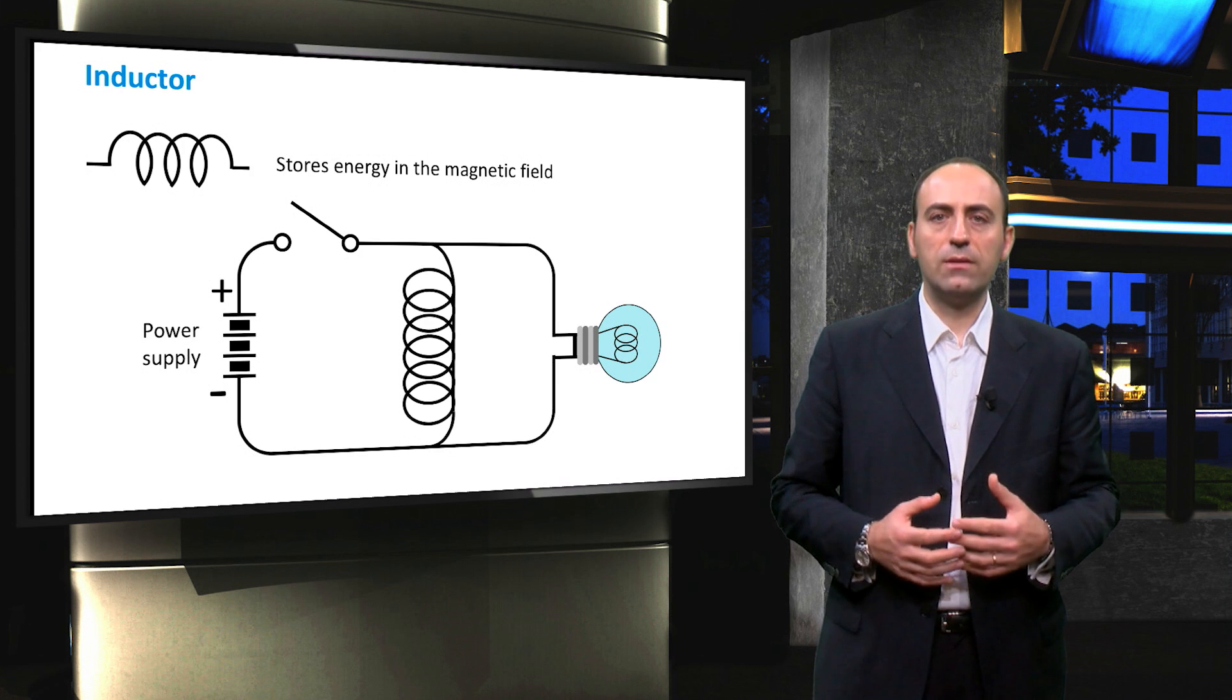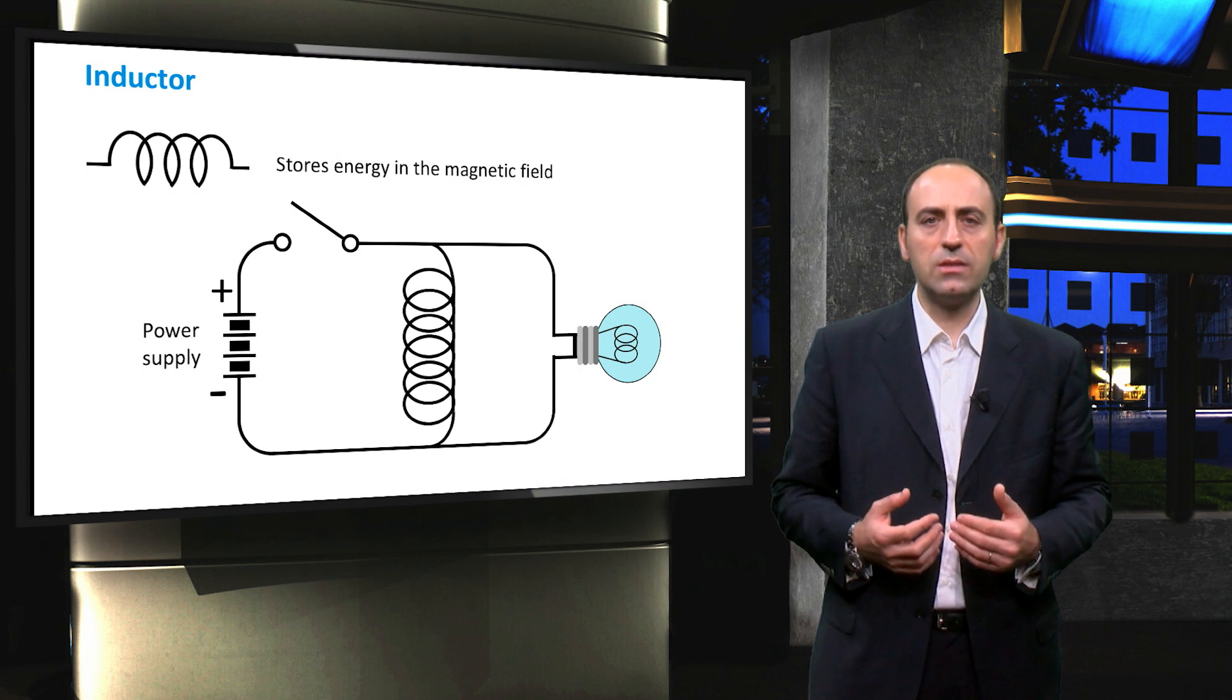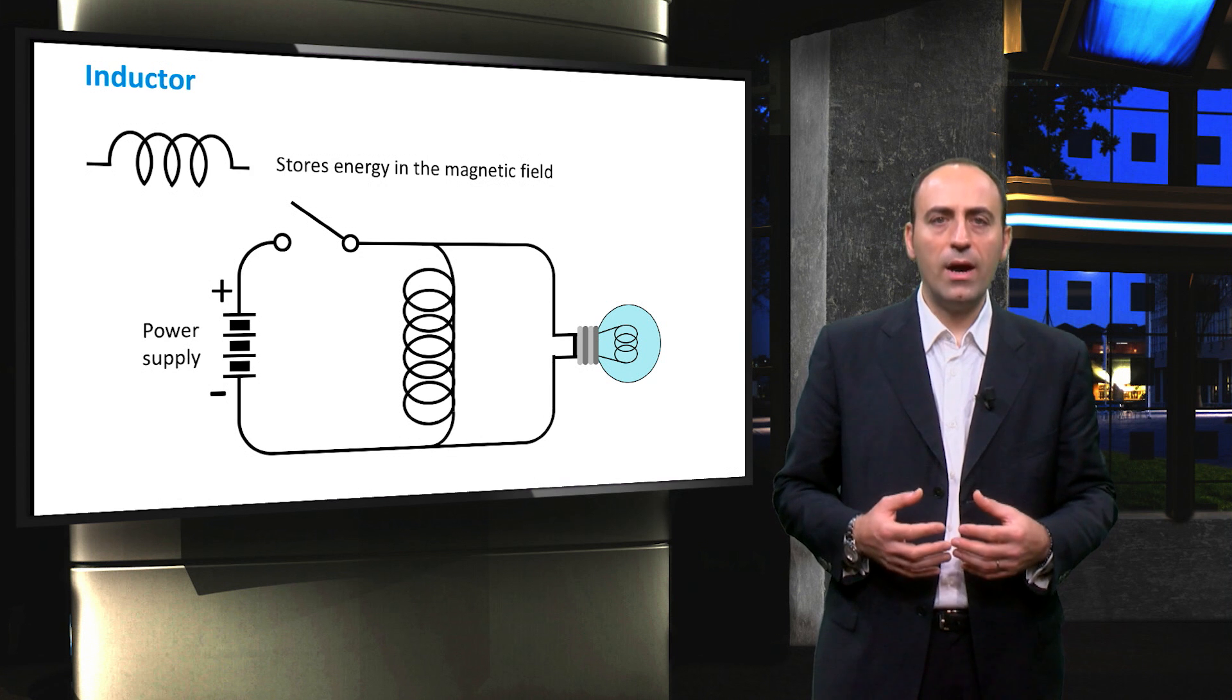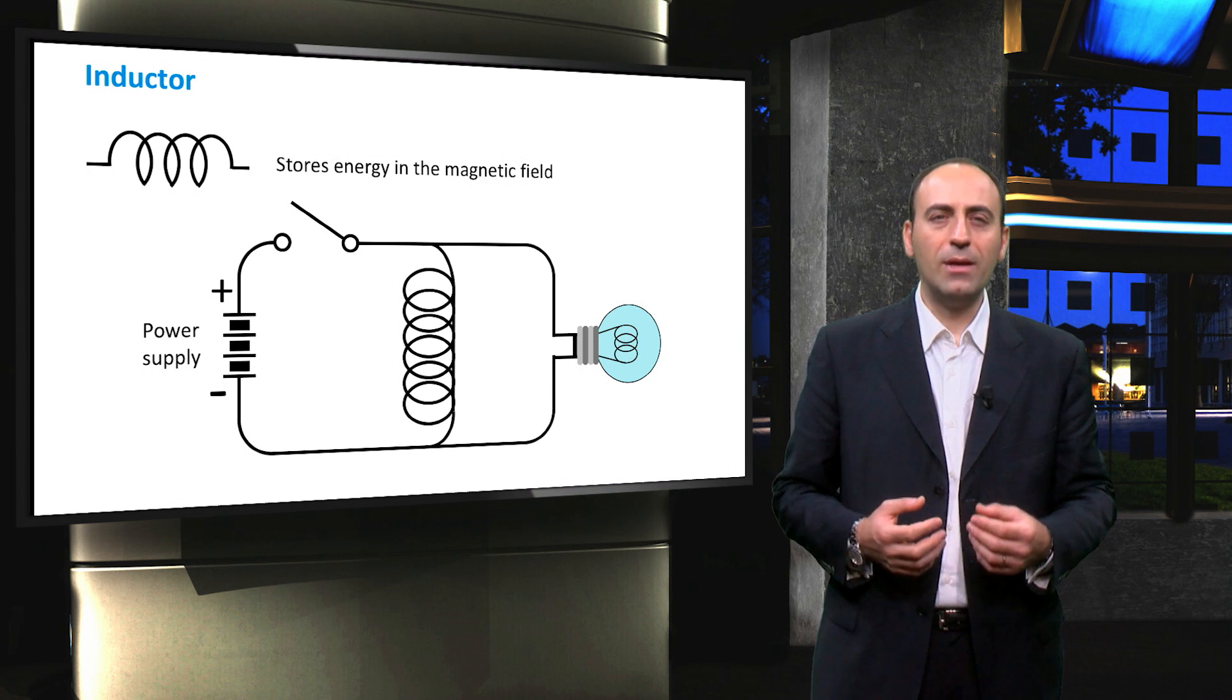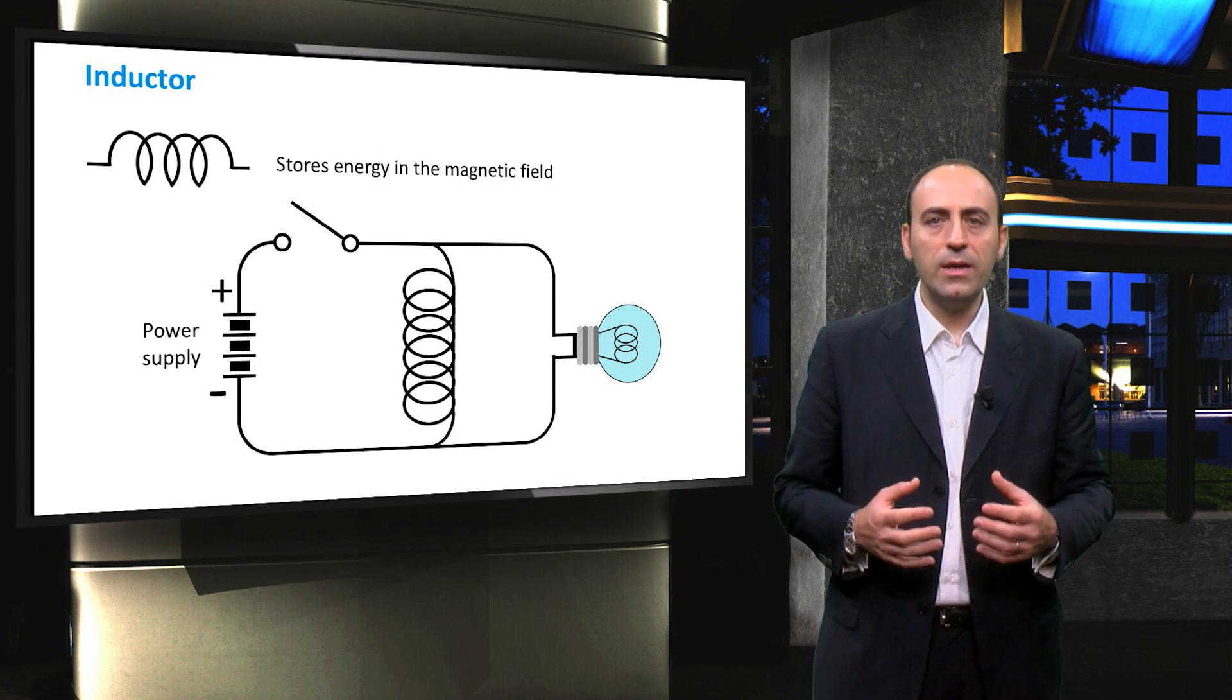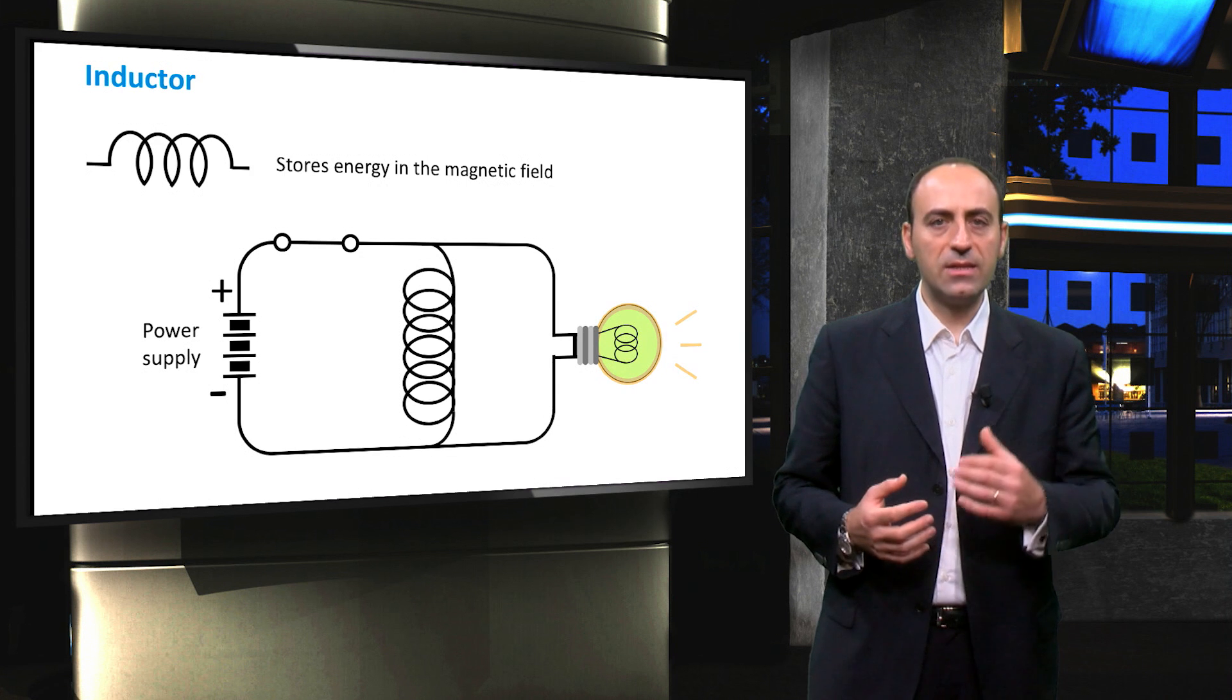First, note that the light bulb is basically a resistor, and this resistance creates heat to make the filament in the bulb to glow. Also, the wire in the coil has a resistance, but it is much lower than that of the light bulb. When we now close the switch, the bulb burns brightly and then gets dimmer.